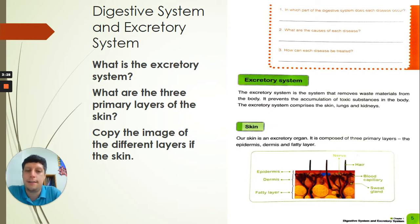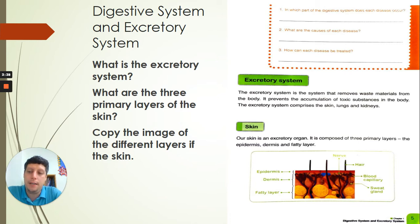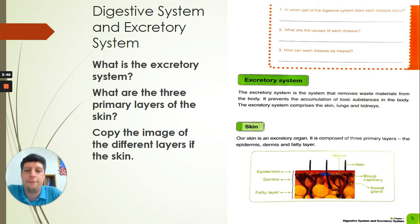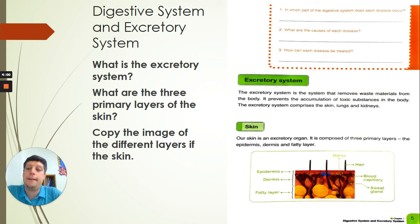The first one is skin. Our skin is an excretory organ. It is composed of three primary layers: the epidermis, the dermis, and the fatty layer. Those words are a little bit difficult to pronounce — the first one is epidermis, the second is dermis, and the third is fatty layer.